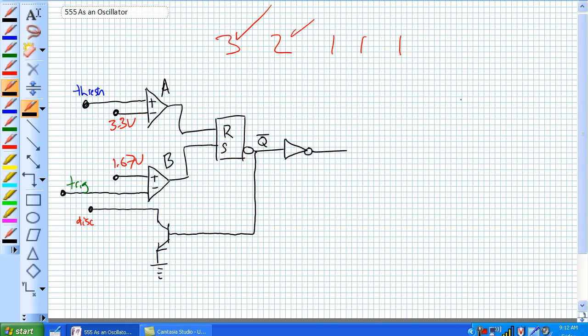where the output of a voltage comparator, if the plus is higher than the minus, it's going to produce a 1. And if the minus is higher than the plus, it's going to produce a 0.